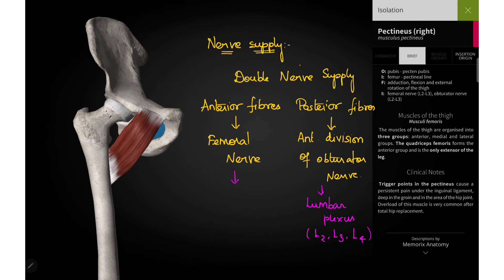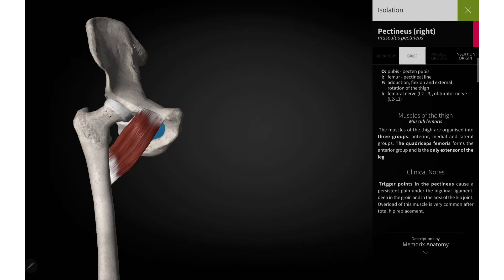Both the femoral nerve and obturator nerve have a root value of L2, L3, and L4. The femoral nerve is formed by the dorsal divisions of the anterior primary rami of L2, L3, and L4, while the obturator nerve is formed by the ventral divisions of the anterior primary rami of L2, L3, and L4. Now coming to the action: the pectineus muscle performs two main actions — flexion of the thigh and adduction of the thigh, as the adductor compartment muscles all help in adduction.